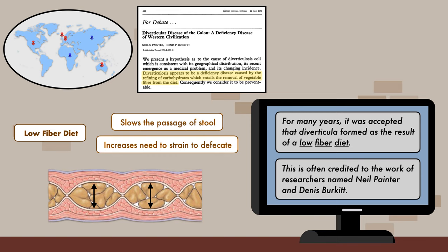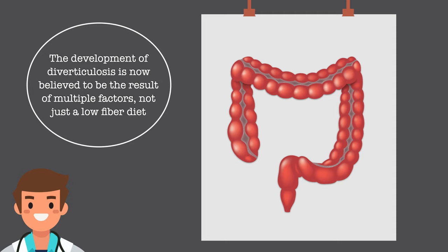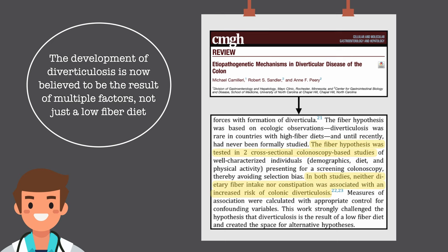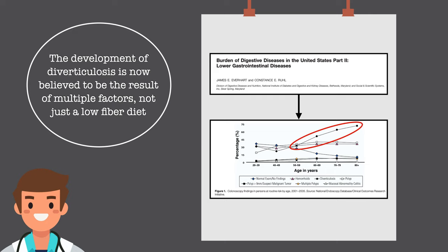Today, this concept hasn't been entirely discounted. However, the development of diverticulosis is now believed to be the result of multiple factors, not just a low-fiber diet. This is in part because of two cross-sectional studies that did not show an association between fiber intake, constipation, and diverticulosis, but also because of the discovery of additional risk factors. We previously saw the relationship between age and the prevalence of diverticulosis, with an increase in age resulting in increased risk.